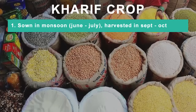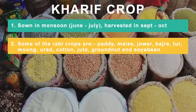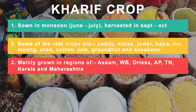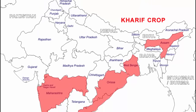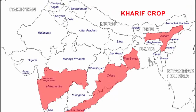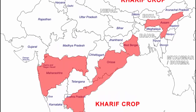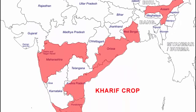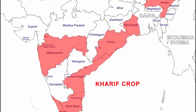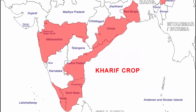Some of the Kharif crops are paddy, maize, jawar, bajra, tur, moong, urad, cotton, jute, groundnut and soya bean. All of these crops are grown in the regions of Assam, West Bengal, coastal regions of Orissa, Andhra Pradesh, Tamil Nadu, Kerala and Maharashtra — all places that receive rainfall from the southwestern wind.